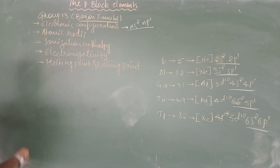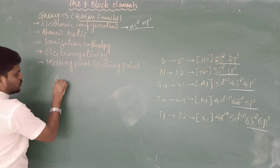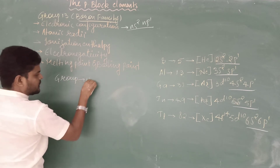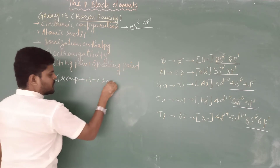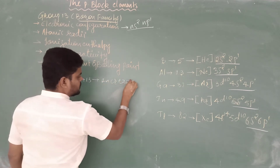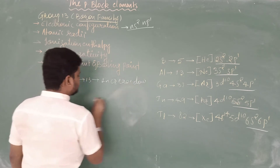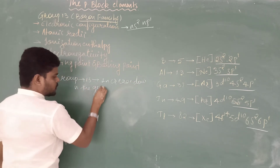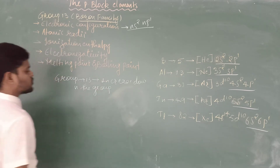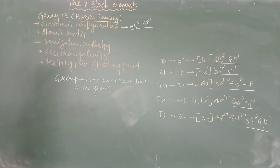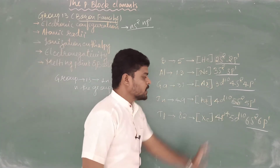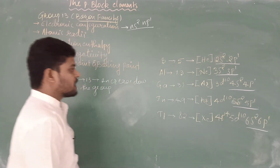Now let's move on to atomic radius. In group 13, atomic radius increases as you move down the group. This is due to the addition of a new principal energy shell with each successive element.